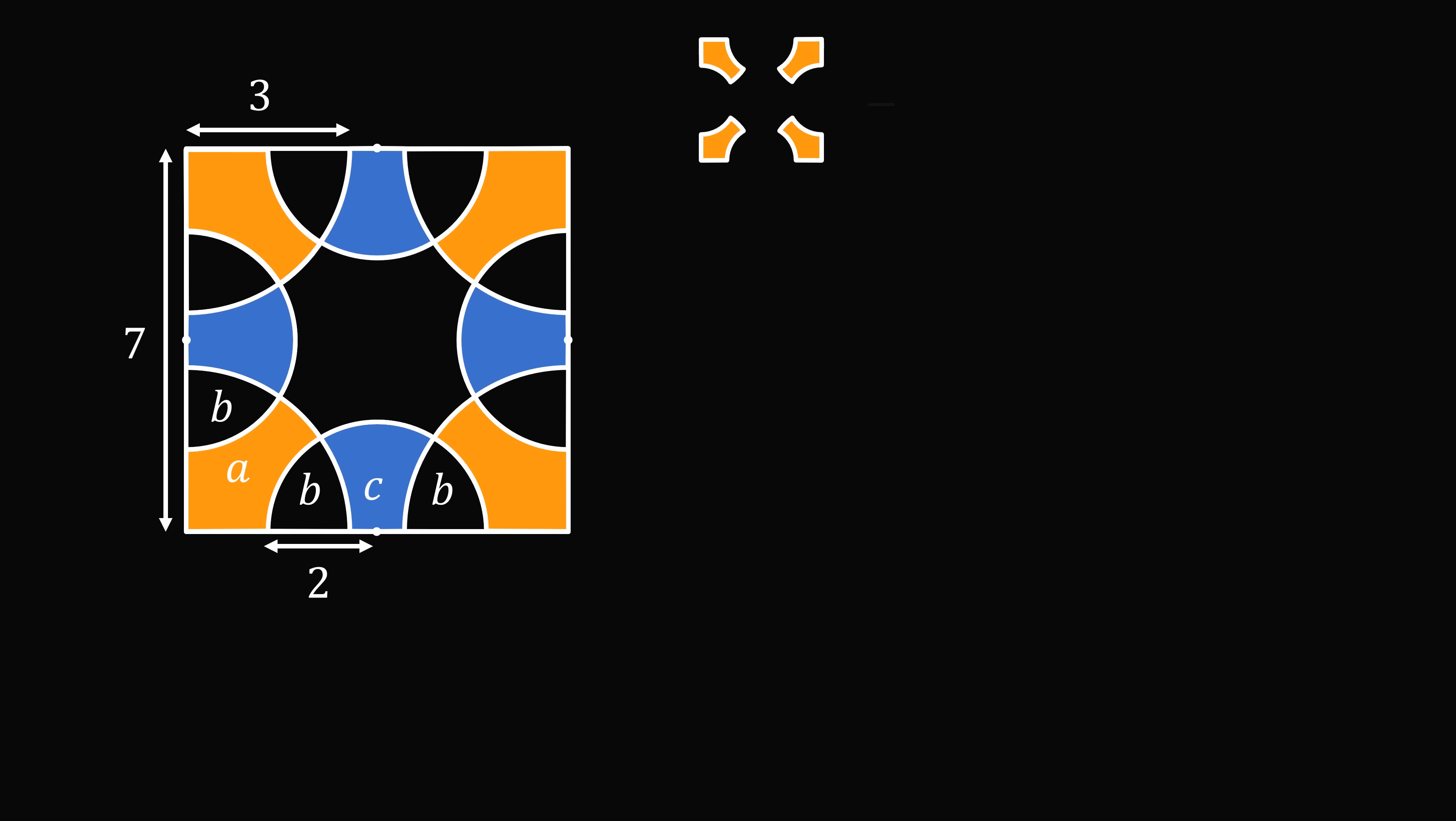So, now, our problem can be translated in terms of a, b, and c. Four orange areas will be equal to 4a, and we want to subtract 4c. So, all we need to do is figure out 4a minus 4c.